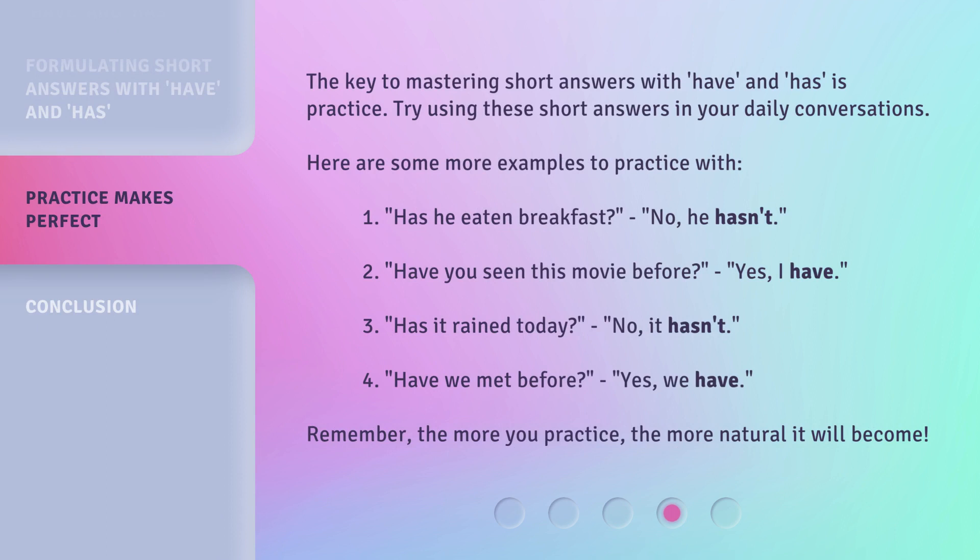The key to mastering short answers with have and has is practice. Try using these short answers in your daily conversations. Here are some more examples to practice with. 1. Has he eaten breakfast? No, he hasn't. 2. Have you seen this movie before? Yes, I have. 3. Has it rained today? No, it hasn't. 4. Have we met before? Yes, we have. Remember, the more you practice, the more natural it will become.